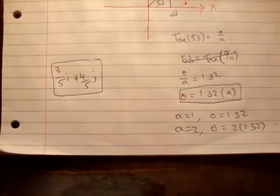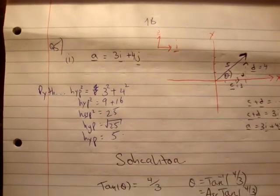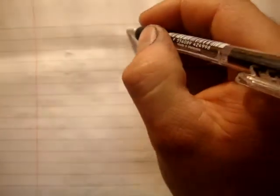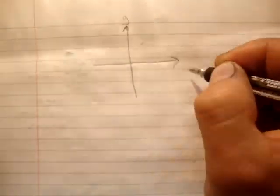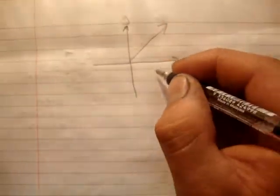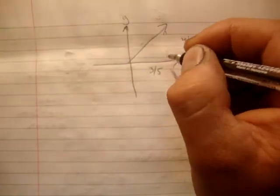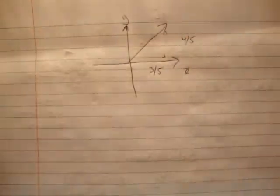So what I'm going to do very quickly is see if that gives me the same angle. 3 fifths i hat plus 4 fifths j hat. So the same stuff, same unit vectors. So we have 3 fifths i hat and 4 fifths j hat. I'm going to move slightly quicker now than I would usually.